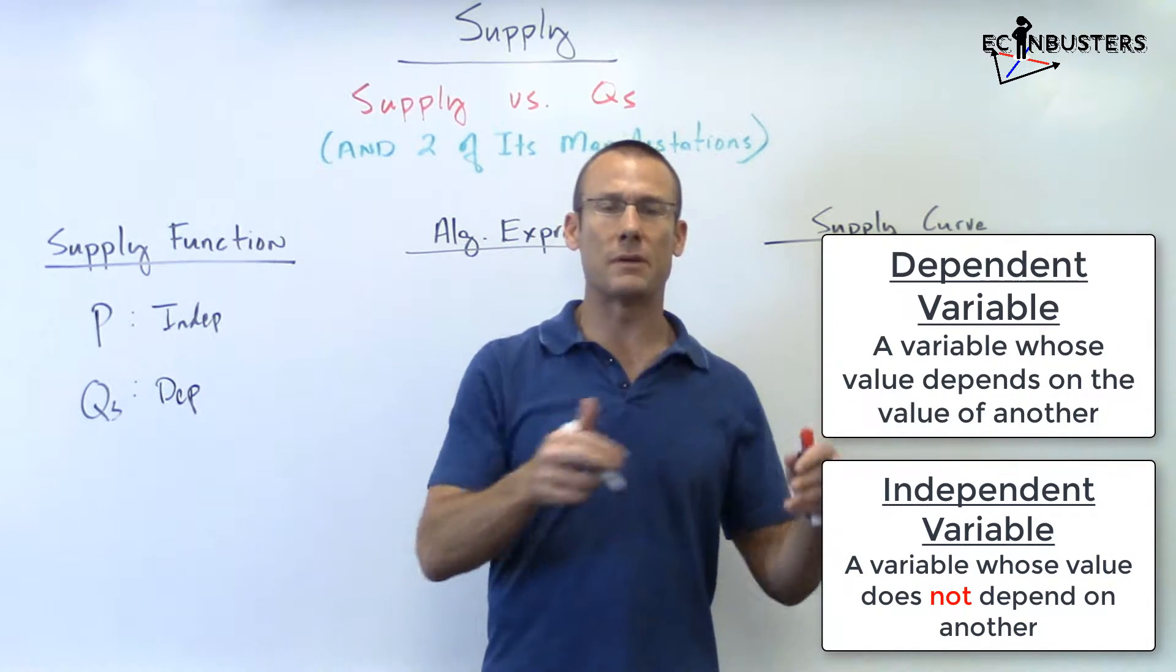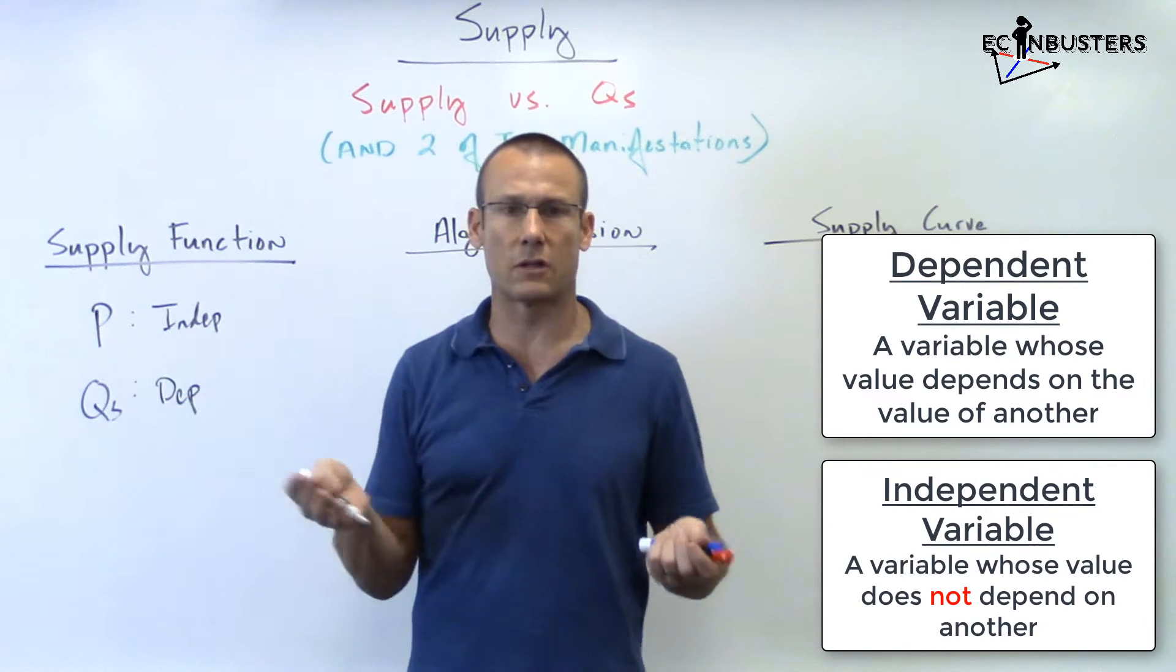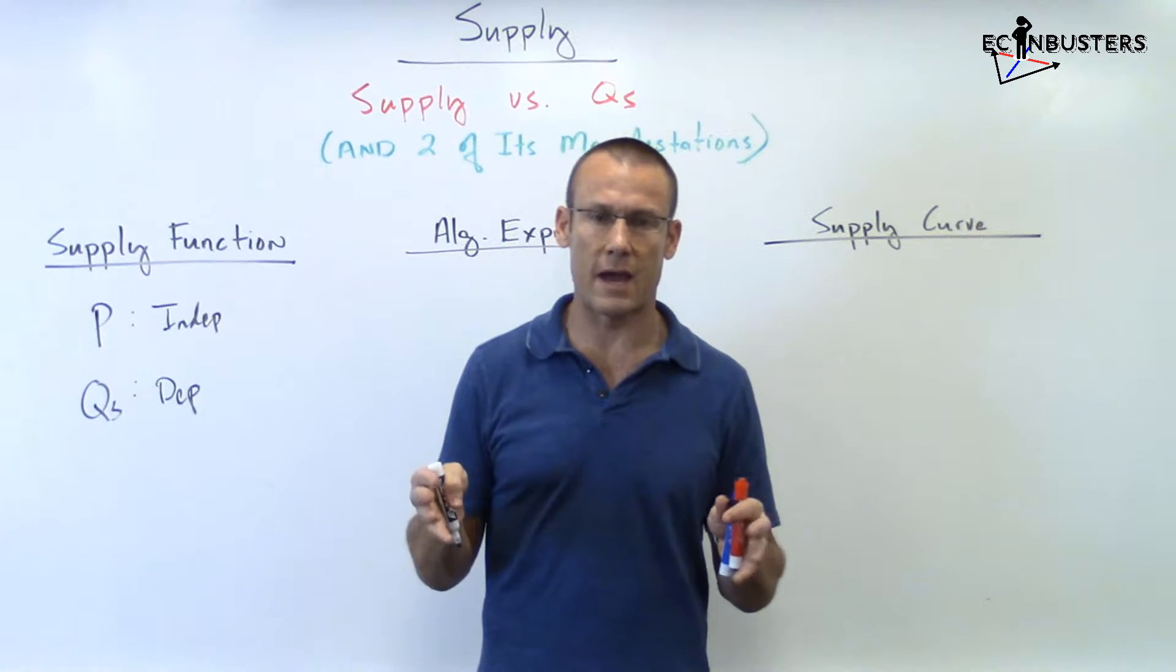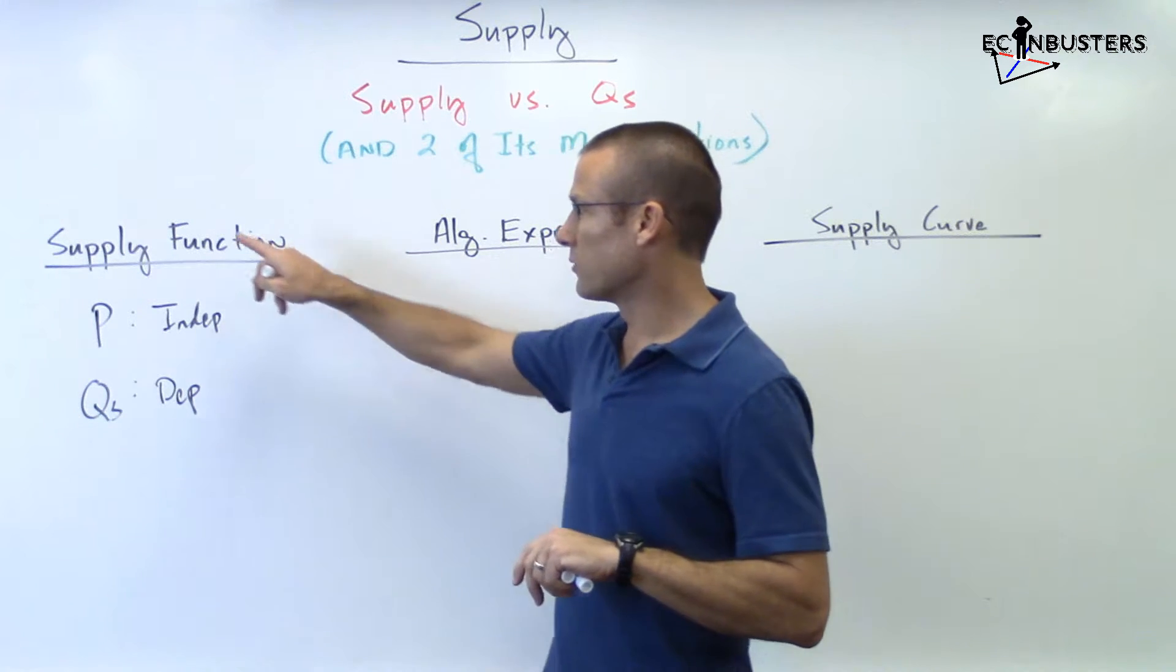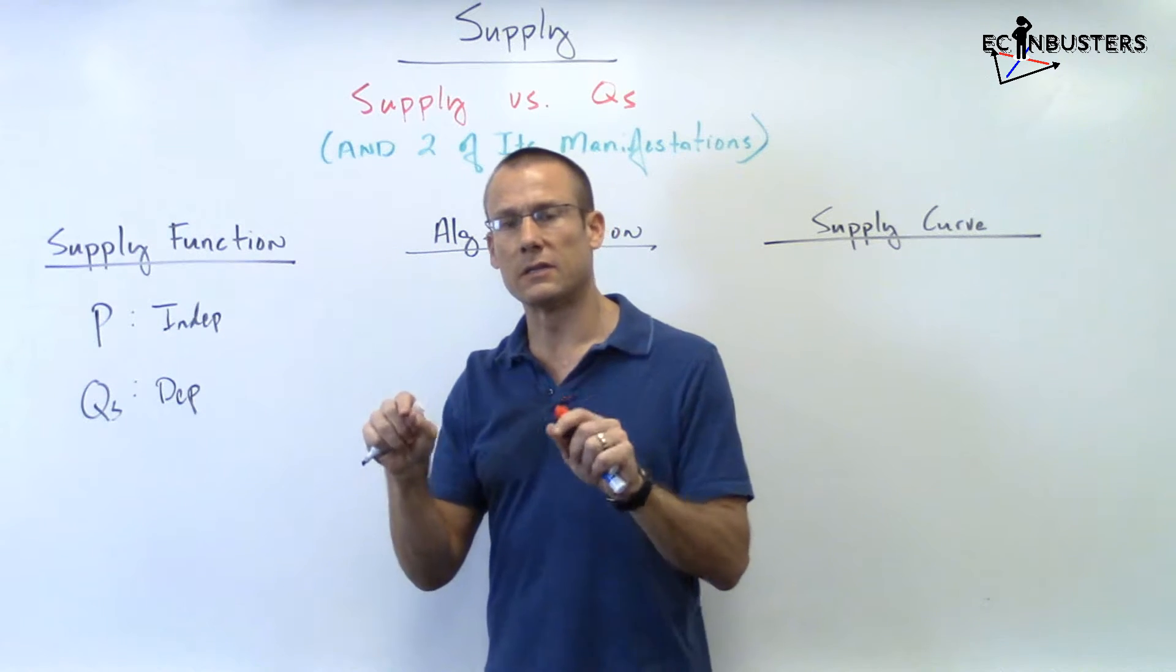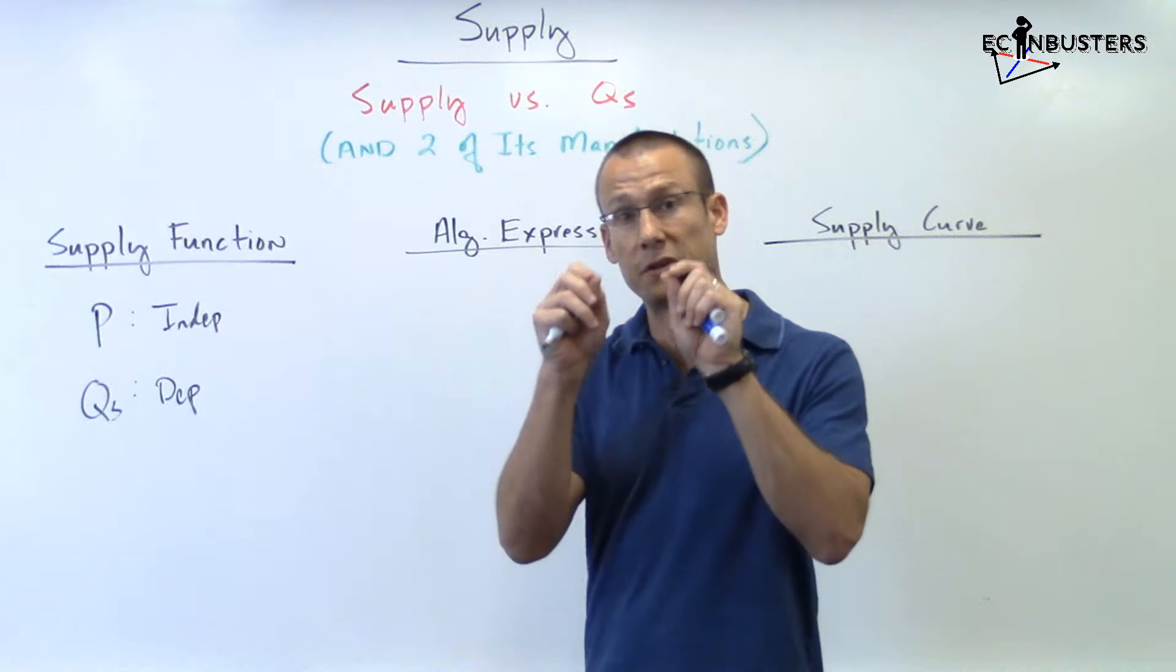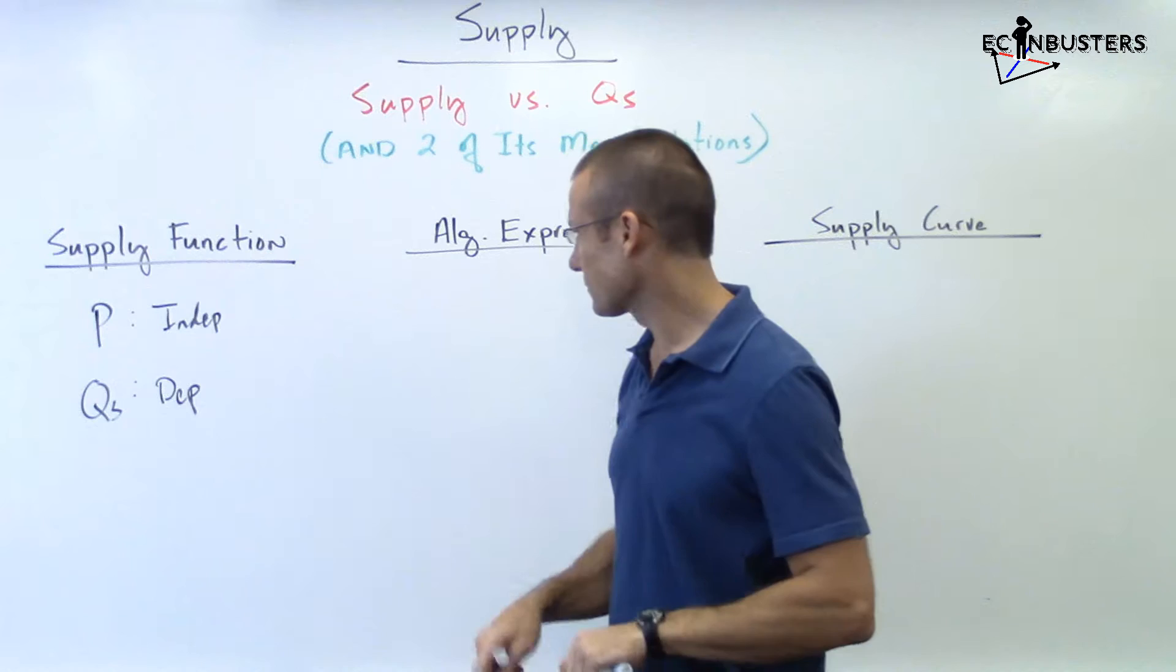If you're already getting ahead of me thinking of the graph and thinking 'hey, P is on the vertical axis, how's that the independent variable?' - because economists have switched the axes when they talk about supply and demand. That's just the way it is. So supply function: it's a relationship between price and quantity supplied. What does supply tell us? Supply tells us the different quantity supplied that we're going to get at every single price point.